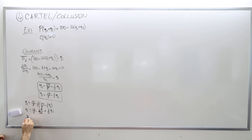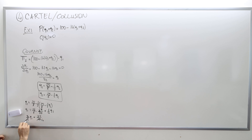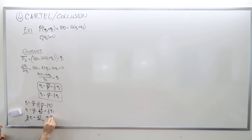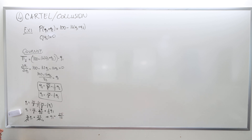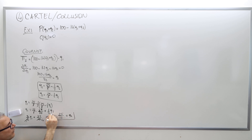So 3/4 Q1 equals 25/16, which means Q1 equals 25/12. That also equals Q2 because the problem is symmetric, so Q1 and Q2 must be the same.